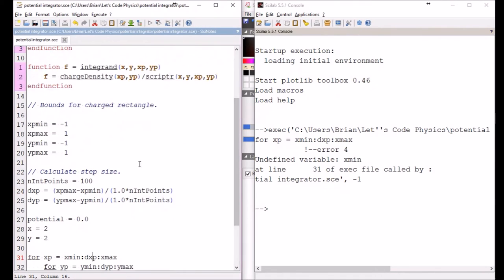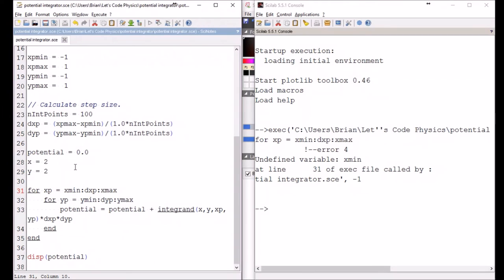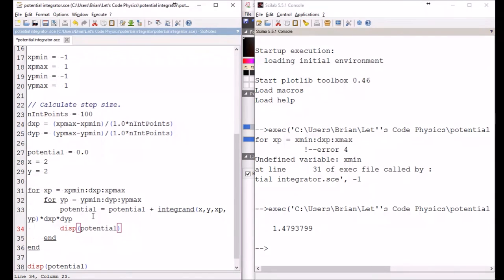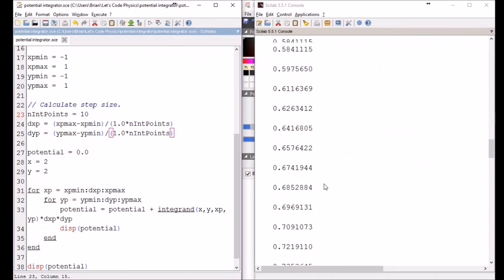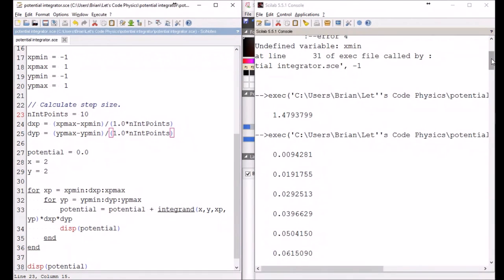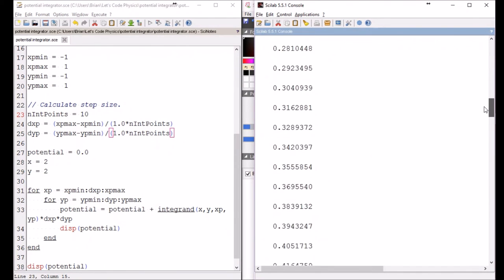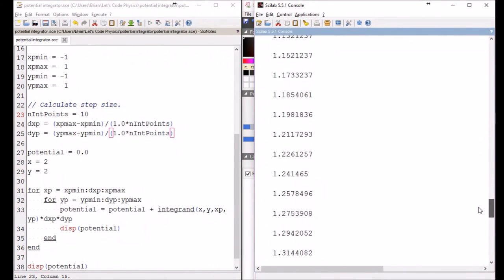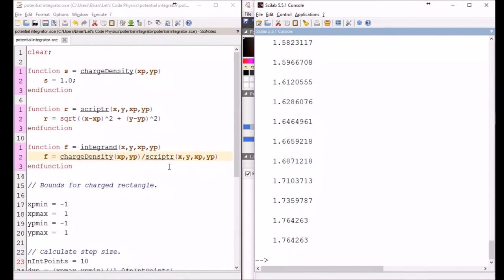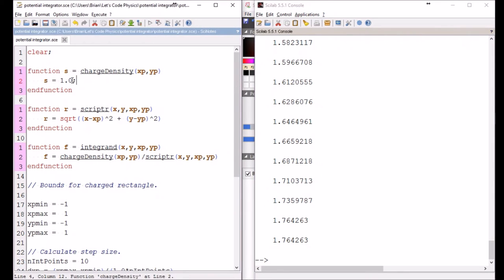If we were to put in a display statement for the potential here, and then decrease the step size so I don't get 10,000 display points, what you see is that it increases every time, right? Because my charge is all positive, it's all contributing to it. And so as I go over the charge square, I'm getting more and more potential added. We can make that a little more interesting if we make this thing non-uniform. So for example, let's suppose this thing went linearly with x prime.